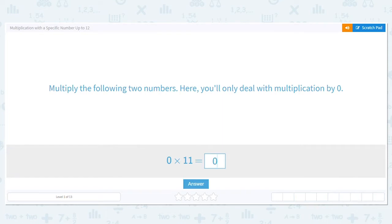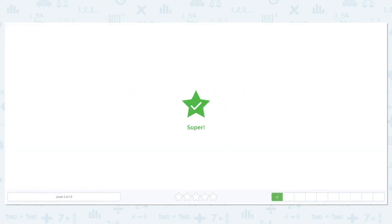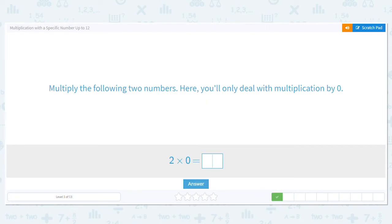Okay, 11 times zero equals zero. Let's try another one.